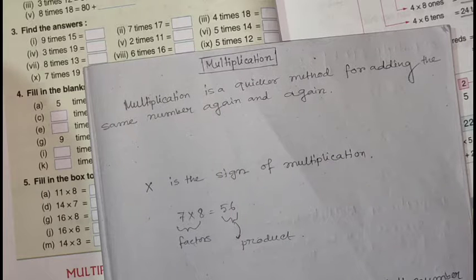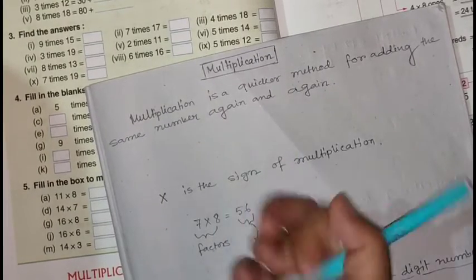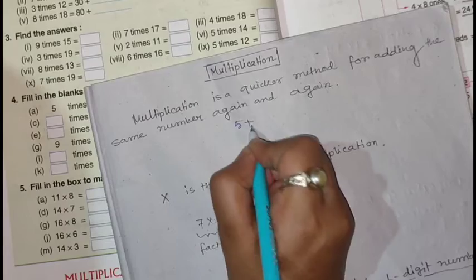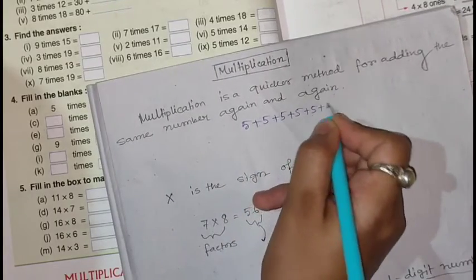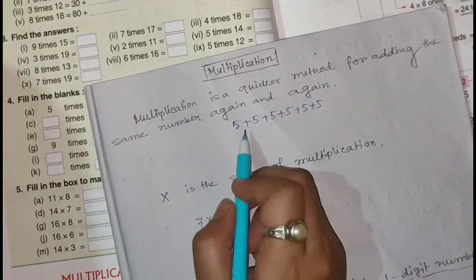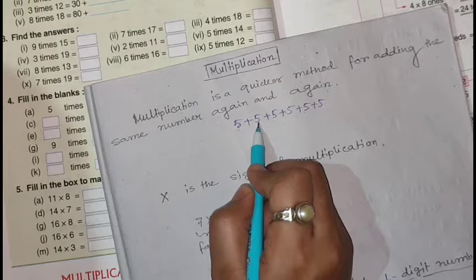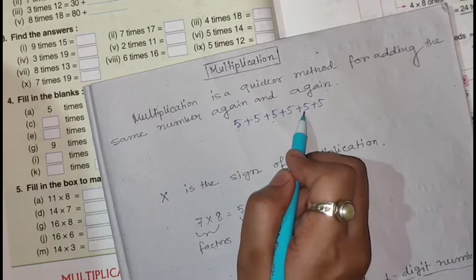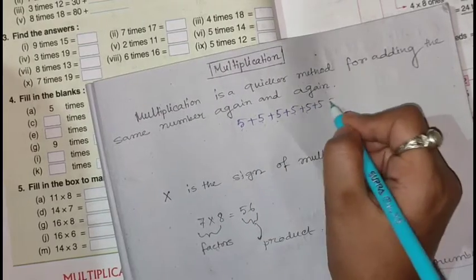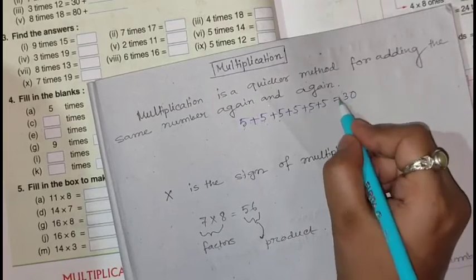Let's see an example. If you add 5 six times: 5 plus 5 is 10, 10 plus 5 is 15, 15 plus 5 is 20, 20 plus 5 is 25, 25 plus 5 is 30. So if you add 5 six times, you get 30.